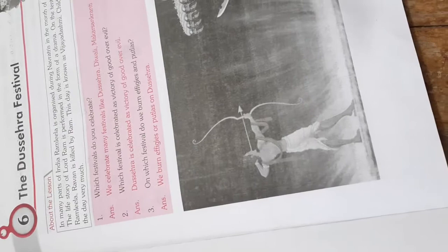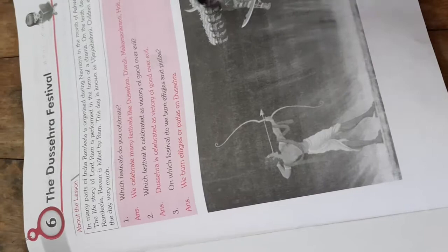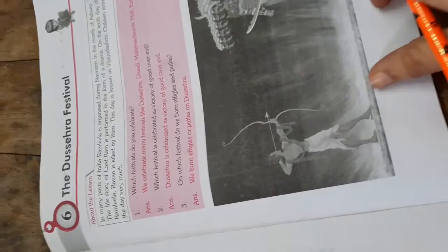Hello everyone, today we are going to start class 5th subject English chapter 6 book exercise and the chapter name is the Dashera festival.